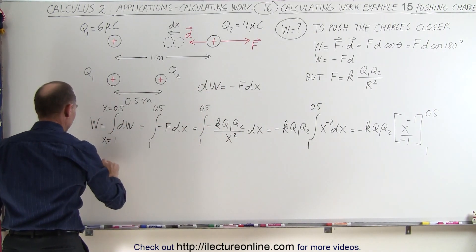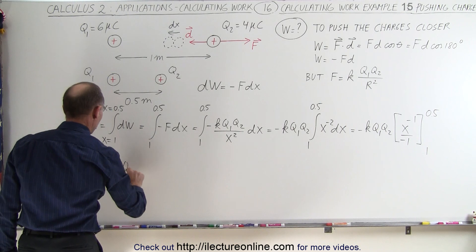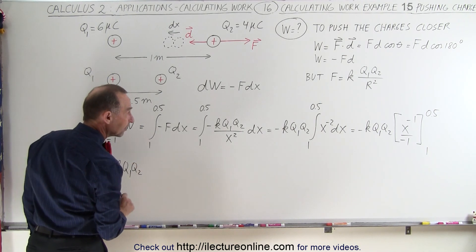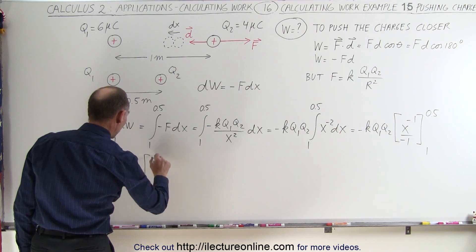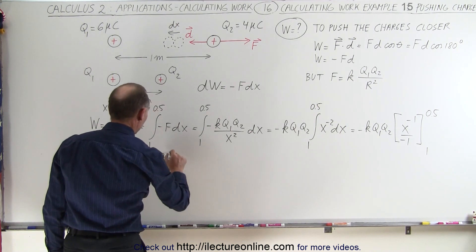So the work done is equal to, we get kq1q2 and that would be times 1 over x evaluated from 1 to 0.5.